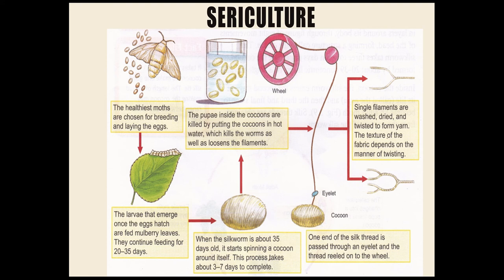First of all, the healthy female silk moth lays hundreds of eggs. These eggs hatch and the larva comes out, which feeds on mulberry leaves for around 20 to 35 days. After achieving its maximum growth, it starts spinning its cocoon, which takes around 3 to 7 days. Then the cocoon is placed in boiling water, which kills the pupa inside and loosens the filaments. Then reeling is done and at the end we obtain the silk fiber and silk fabric.